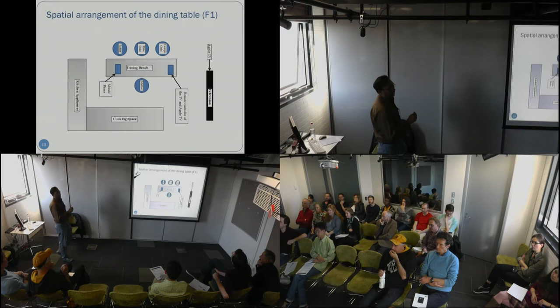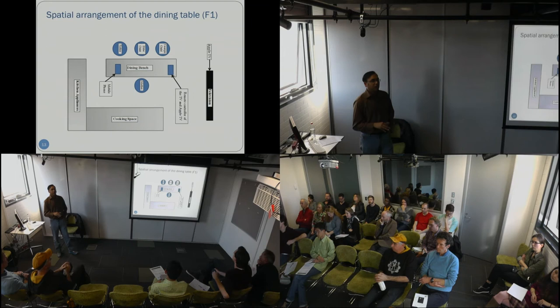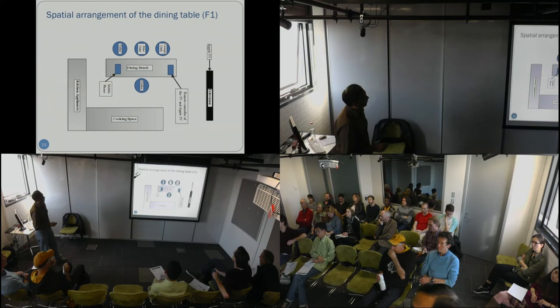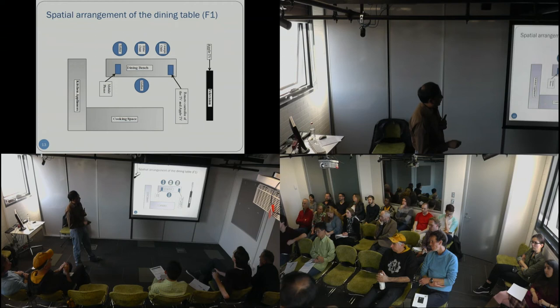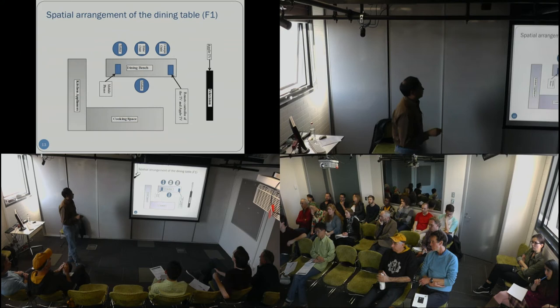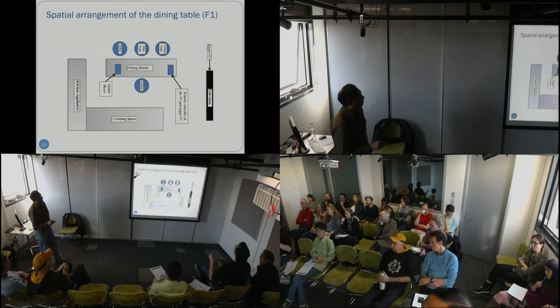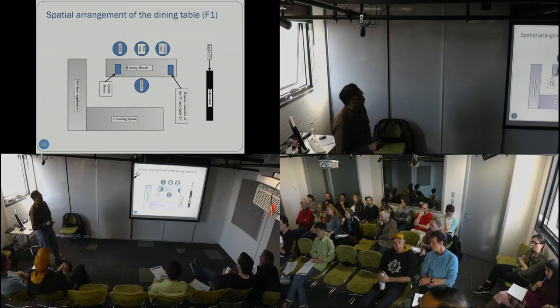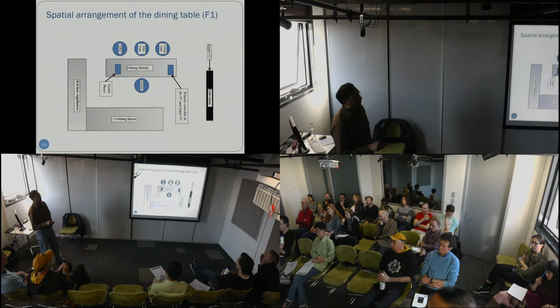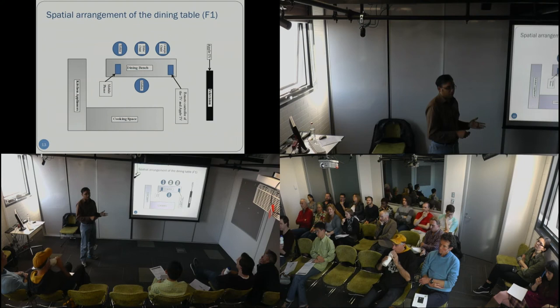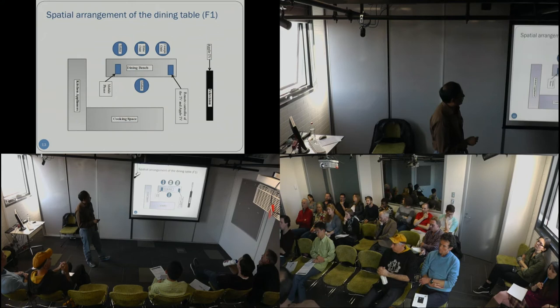We focused on the spatial arrangement of technologies — how they are placed in the mealtime context. For Family 1, the television is here, the cooking space is here, and family members eat at the dining bench. The mother sits so she can reach all her physical artifacts required for eating. The shelves and cooking spots are arranged around her. Her mobile phone is kept nearby, the husband keeps his in his pocket, and the remote controls for television and Apple TV are within reach. The technology needed during dinner is within reach of her hands.